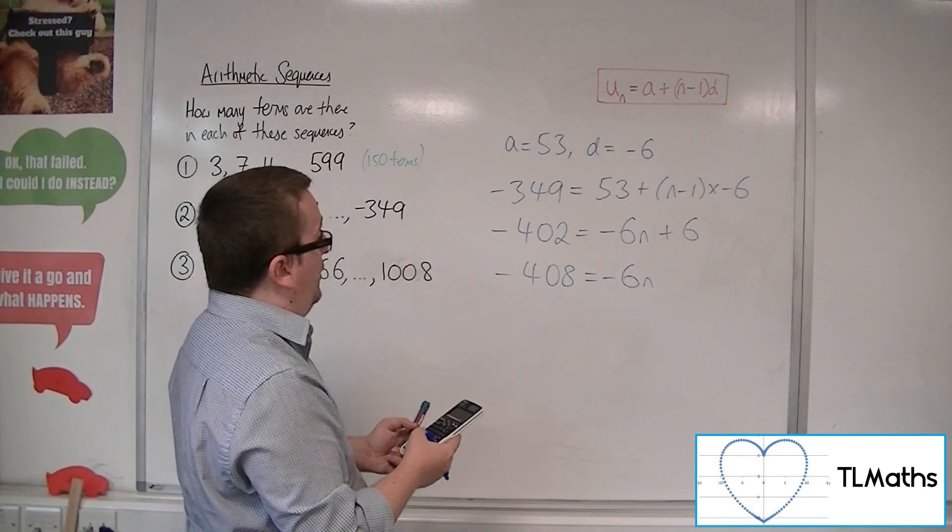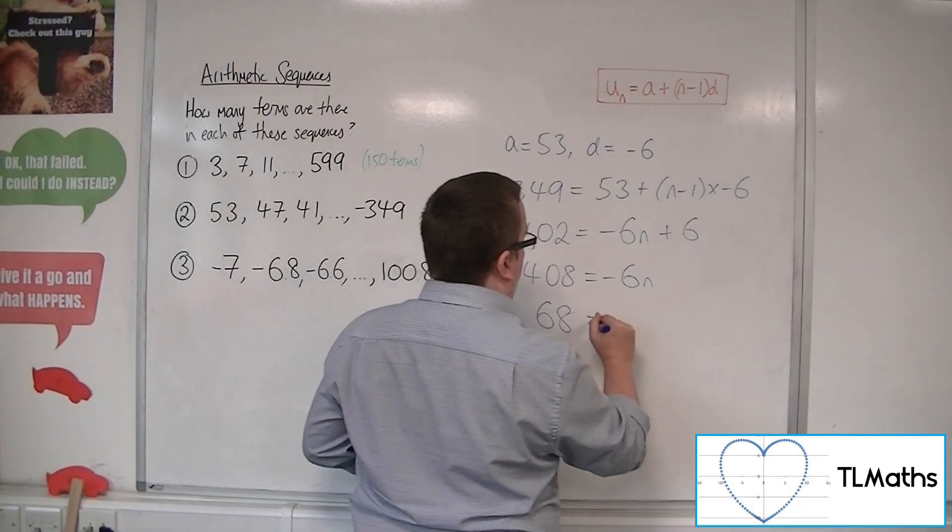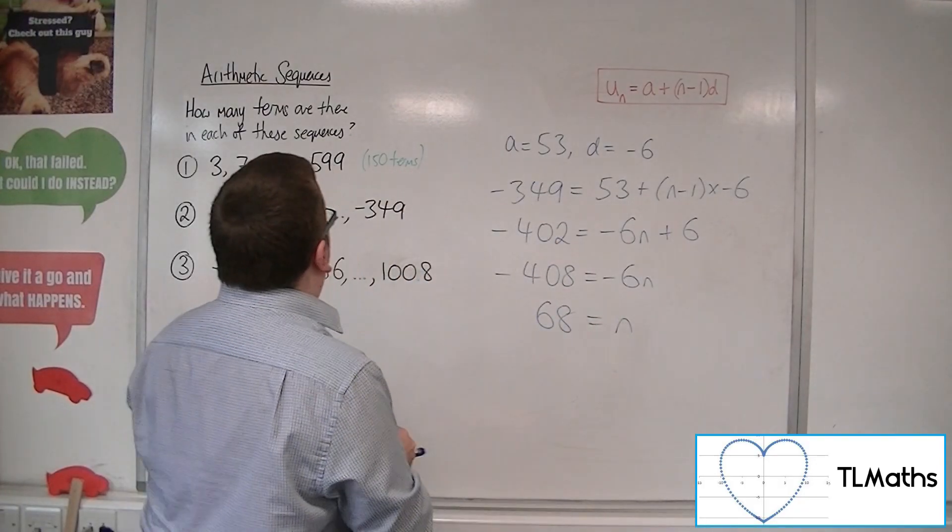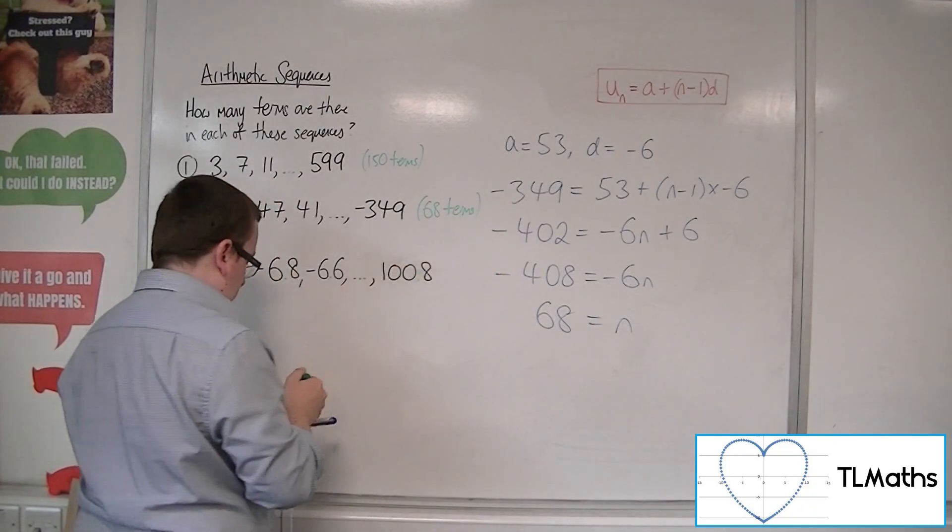And then divide both sides by minus 6. And that gets me 68. So that means that there are 68 terms in the second sequence.